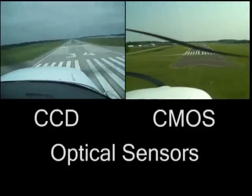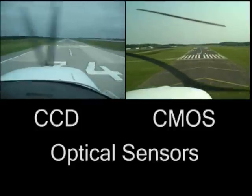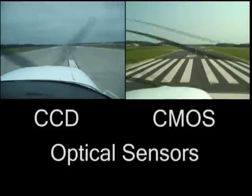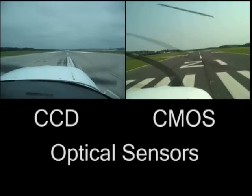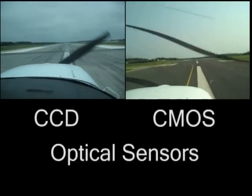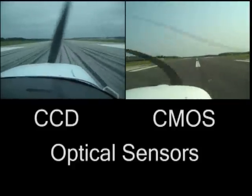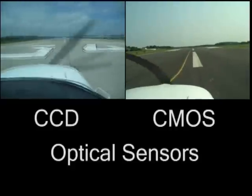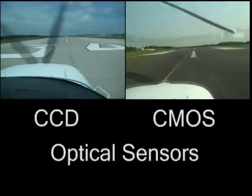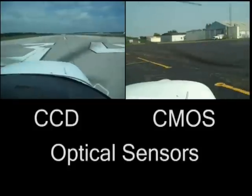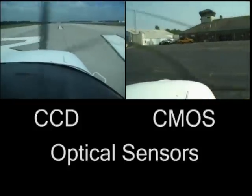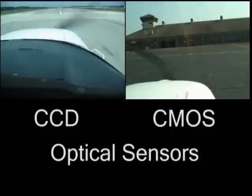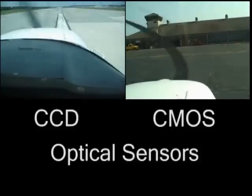The two different patterns of artifact are caused by different optical sensors used by cameras. Generally, cameras employ one of two different optical sensors: CMOS or CCD. The curvy lines are typically generated by cameras employing CMOS-based sensors, while the prop silhouette is typically generated by cameras using CCD-based sensors.